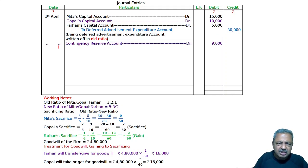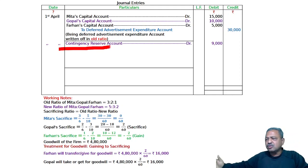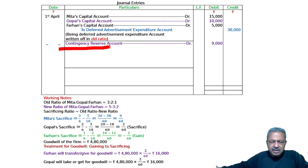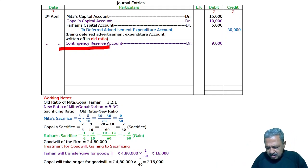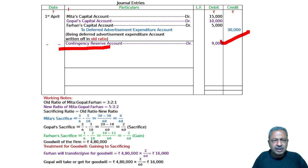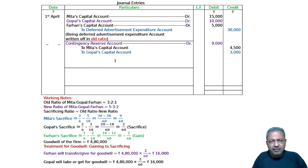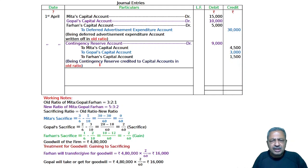Contingency reserve is maintained for future problems — unforeseeable circumstances such as a factory fire or office loss. The contingency reserve money is used to cover such losses. Journal entry: Contingency reserve account debited to Mitha, Gopal, and Farhan's capital accounts. Being contingency reserve credited to capital accounts in old ratio.